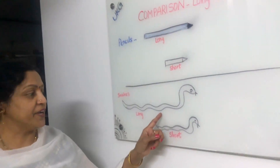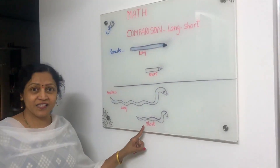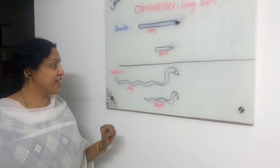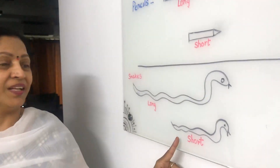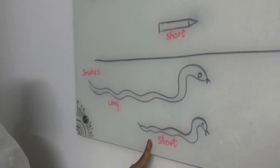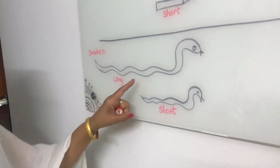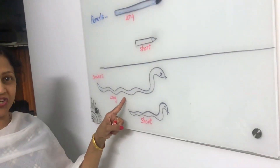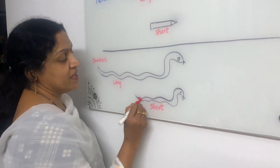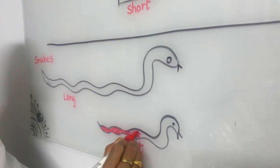Now we have to identify the long snake and the short snake. Which one is the long snake? Yes, this one. Which one is the short snake? Yes, this one. This is the long snake and this is the short snake. Now we have to color the short snake. You draw two snakes like this and color the short snake.